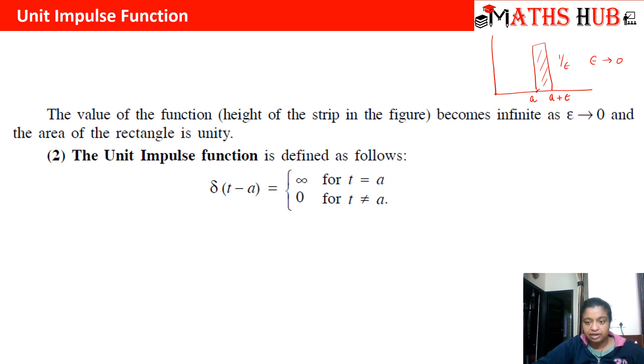As epsilon approaches to 0, what happens? These two points will nearly come to the same point, and 1 by epsilon—this rectangle will reach to unity. Hence that function is called a unit impulse function.